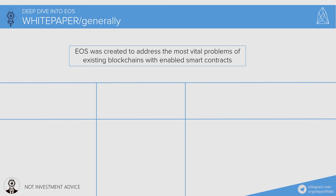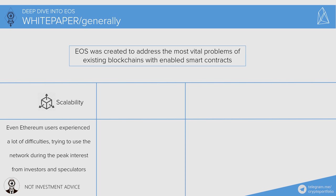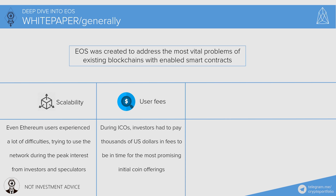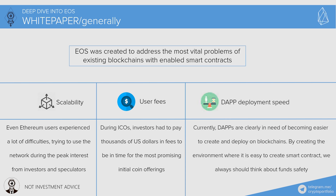Each project in the ICO space tries to solve certain problems, and EOS is no exception. First and foremost: scalability. Bitcoin and Ethereum in their current form cannot process the number of transactions needed to accelerate mass adoption. During the busiest days in December 2017, even Ethereum was unusable. The next big problem is user fees — during ICOs, investors had to pay thousands of dollars in fees to participate in the most promising ICOs. Ease of deployment of decentralized applications is another major concern — DApps need to become easier to create and deploy on blockchains.